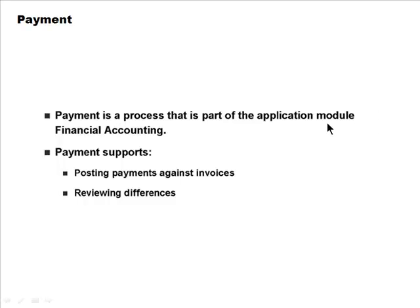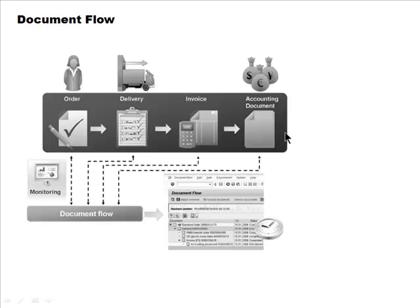Payment is the customer making a payment as a result of our invoicing. From the sales and distribution perspective, creating a billing document ends the process — financial accounting now has open items. The payment process allows posting payments against invoices and reviewing differences; if the customer pays less, you can track what is still owed.